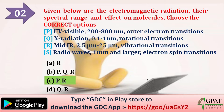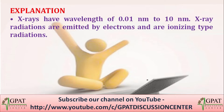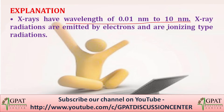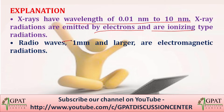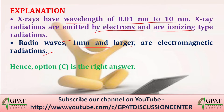The explanation: X-rays have a wavelength of about 0.1–10 nm and are ionizing radiations emitted by electrons, so Q is incorrect regarding rotational transitions. Radio waves of 1 mm or larger are electromagnetic radiations associated with nuclear spin transitions, not electron spin. Therefore, option C — P and R — is the right answer.